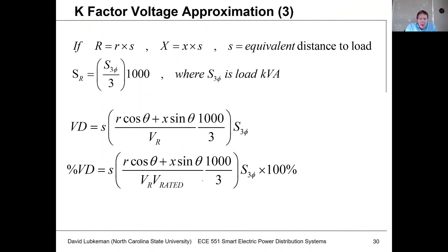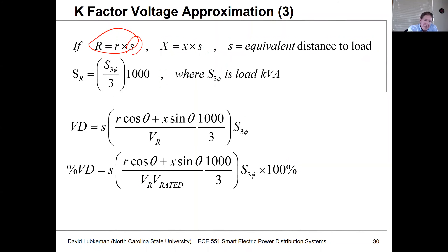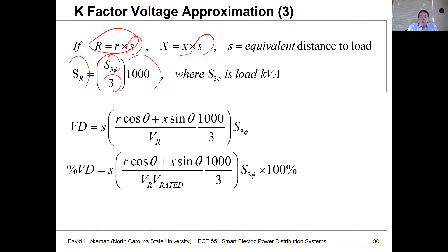We calculate R as a function of the equivalent line length S, where small r and small x are the equivalent resistance and reactance per unit length — usually per mile or per kilometer. For Sr, the single-phase load, we take the three-phase load, divide by three, and multiply by 1,000 if we want S3-phase to have units of KVA. That's typically a good number for distribution-level calculations.